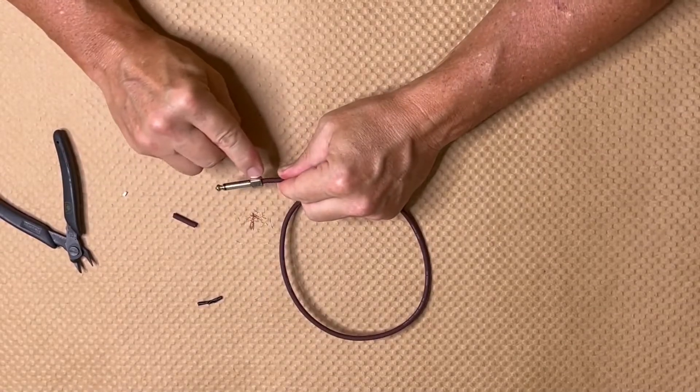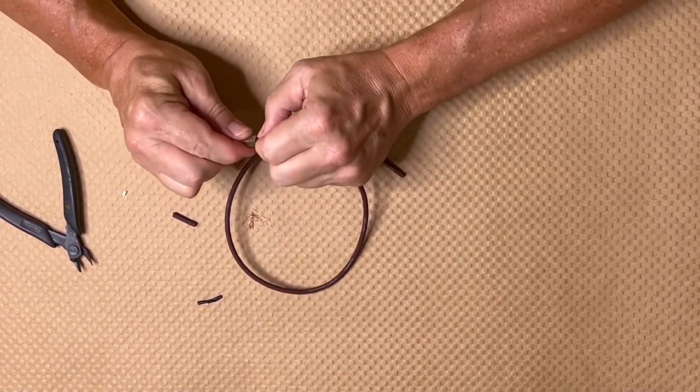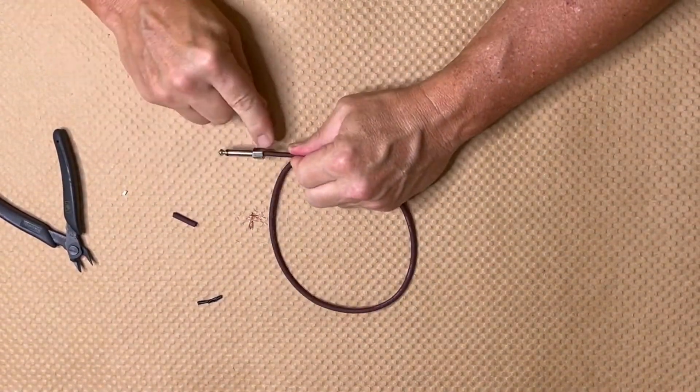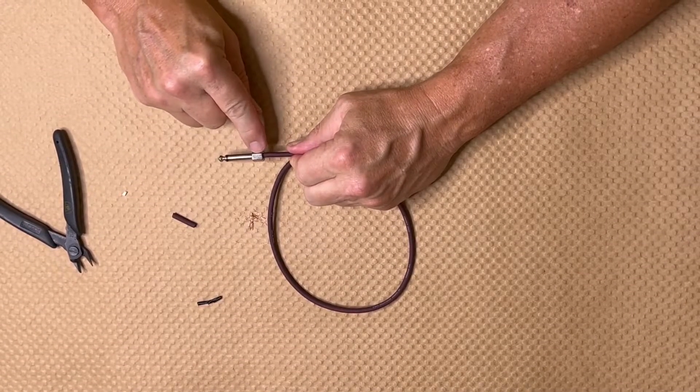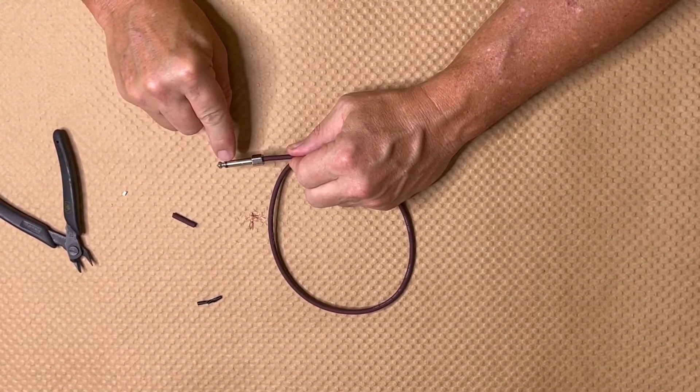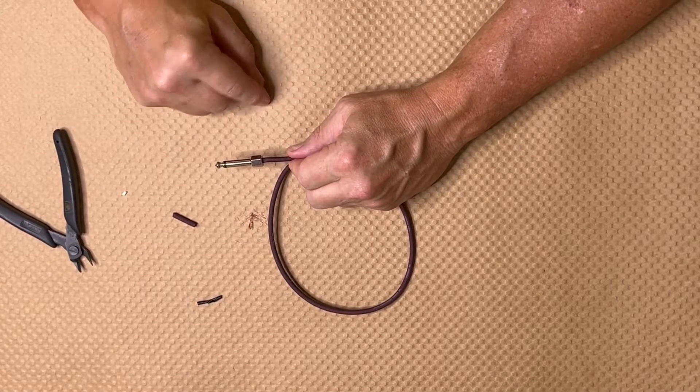So what you've done there is got an airtight connection with the shield in the inside of the ground connection and one with the tip into the center of the plug.